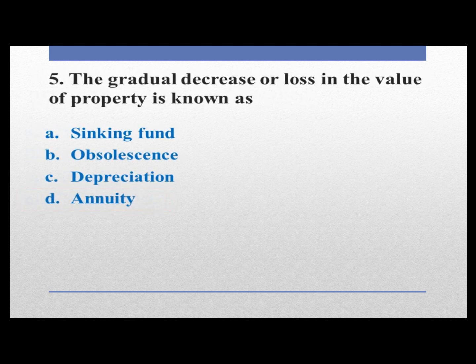The gradual decrease or loss in the value of property is known as: option A sinking fund, option B obsolescence, option C depreciation, option D annuity. The gradual decrease or loss in the value of property is known as depreciation. Option C is correct.